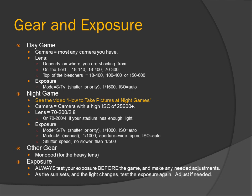For night games, you need a camera with a high ISO of 25,600 or more. Lens: 70-200 f/2.8, or 70-200 f/4 if your stadium has enough light. Exposure mode: S or TV (shutter priority), 1/1000th of a second, ISO auto.